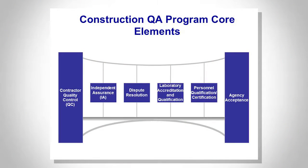This is an expansion of 23 CFR 637 related to construction. On the far left is the quality control stem — remember the three-legged stool. On the far right is acceptance. In the middle are other attributes related to the material sampling and testing program required as part of the Federal Highways program: independent assurance, dispute resolution, laboratory accreditation and qualification, and personnel qualification and certification.